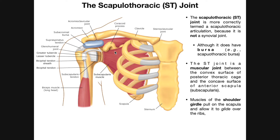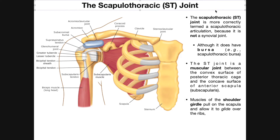So what is it? It's an articulation between the convex surface of the posterior thoracic cage and the concave surface of the anterior scapula. You can see the subscapularis muscle of the scapula connecting with the posterior part of the thoracic cage, and those two surfaces are in direct contact with one another. It's not a synovial joint — it does not have synovial membranes or a joint capsule. It does have bursa, such as the scapulothoracic bursa, but it is not itself a synovial joint.